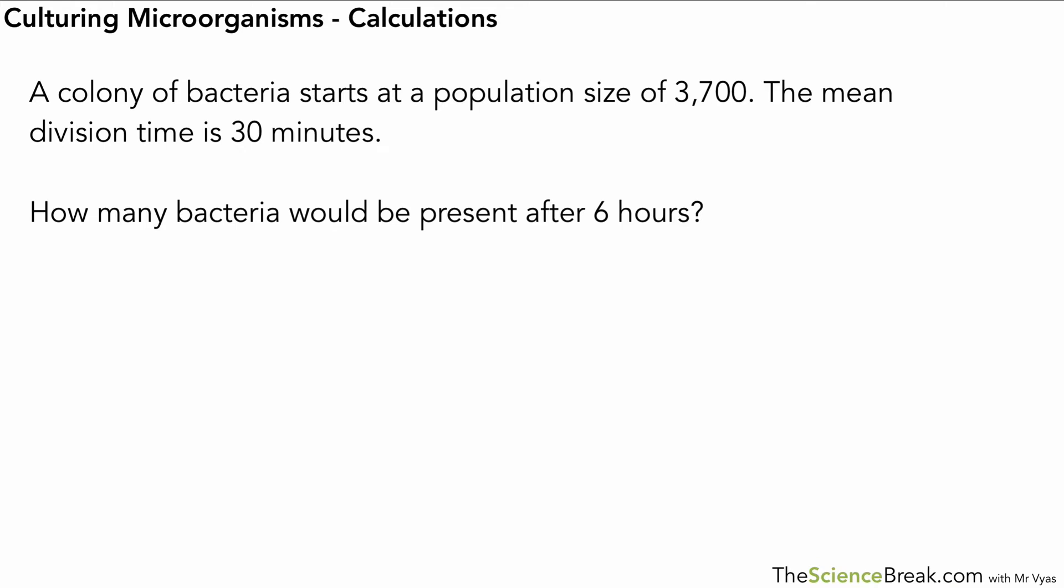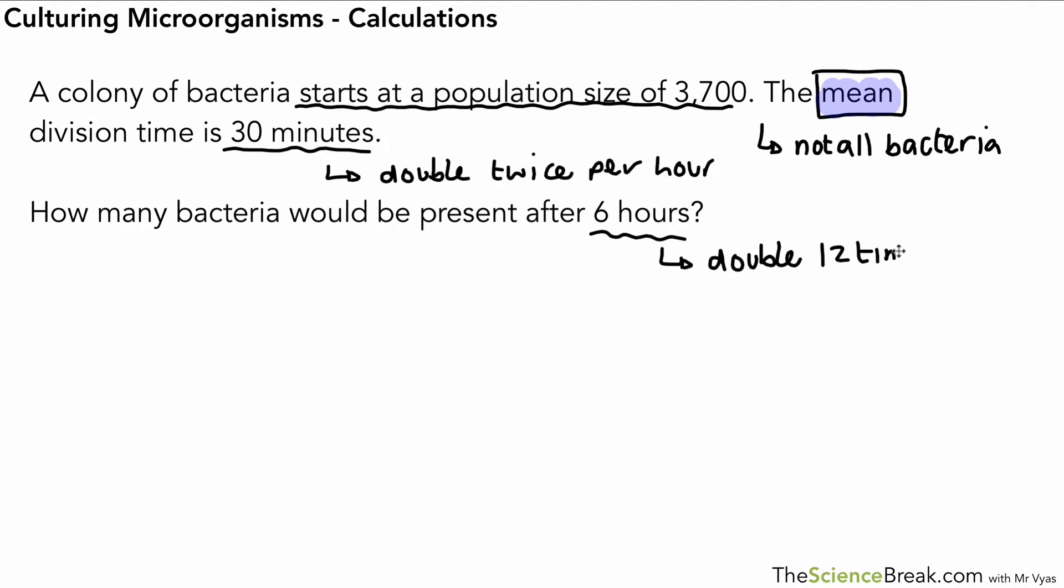Let's look at a calculation. We have a population size that starts at 3,700. The division time is 30 minutes—we say the mean division time because not all bacteria divide at exactly 30 minutes, but on average the mean is 30. If they divide every 30 minutes, that's twice every hour. We want to know how many after six hours. If we've got six hours and they double twice every hour, that means they double 12 times.